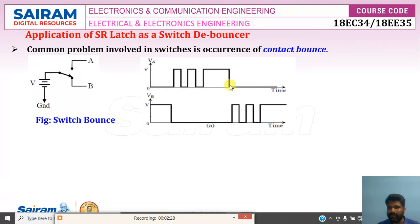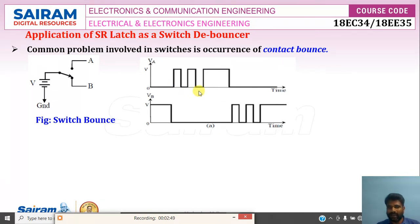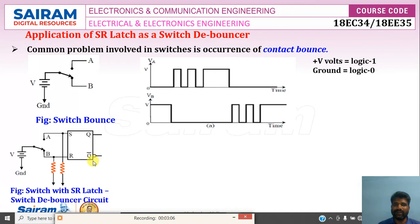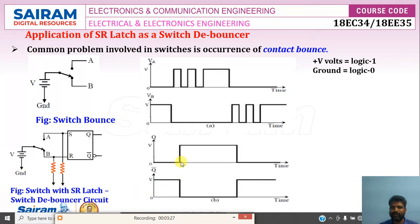Similarly, after some time when it leaves A, it becomes zero, but touches B and leaves again, touches and leaves, and after some time settles at B. This is the contact bounce when changing from A to B, and this is the contact bounce when changing from B to A. This contact bounce can be removed using SR latch. Here, plus volt refers to logic 1 and ground refers to logic 0. This is the debouncer circuit — terminal A is connected to S and terminal B is connected to R through a resistor to ground.